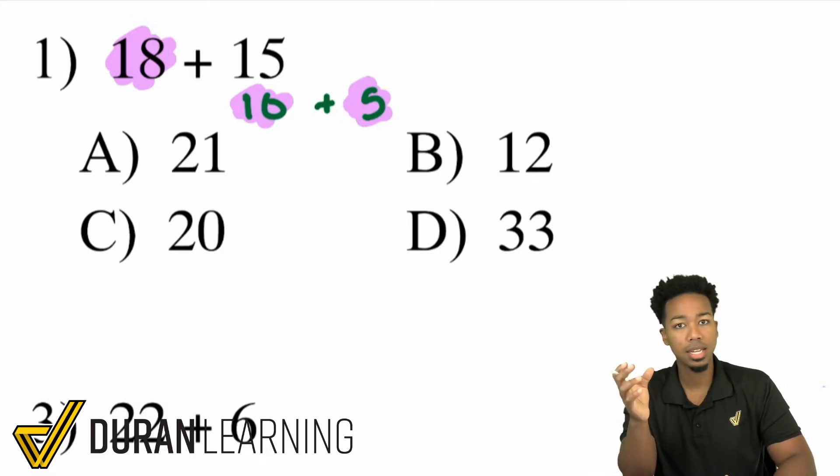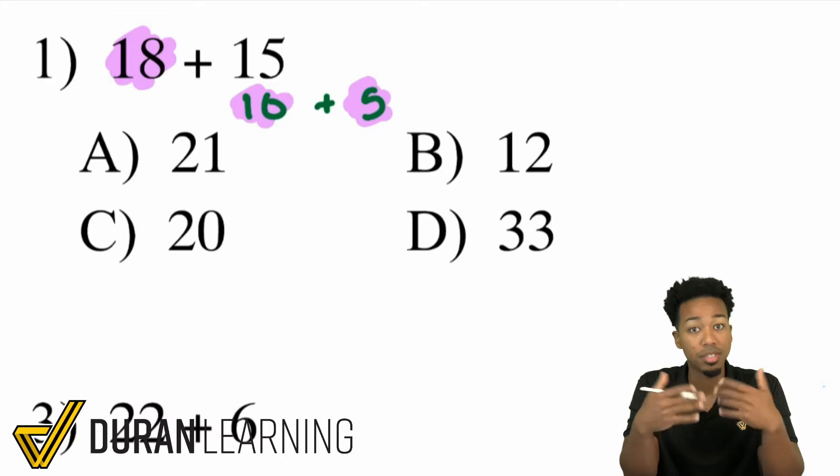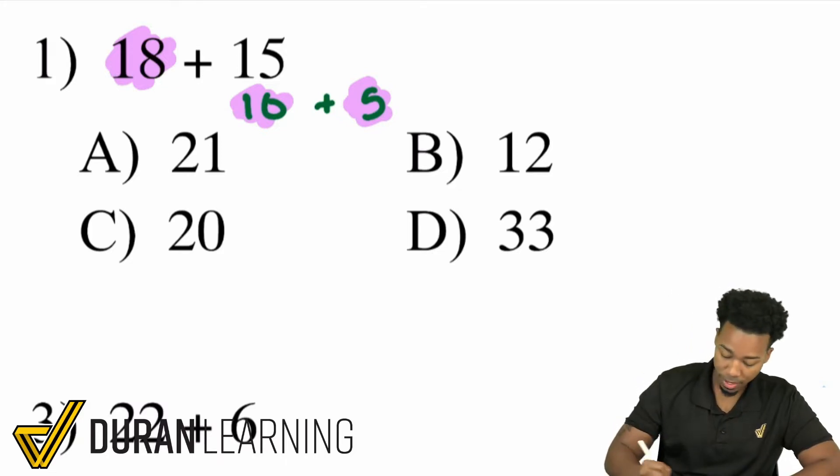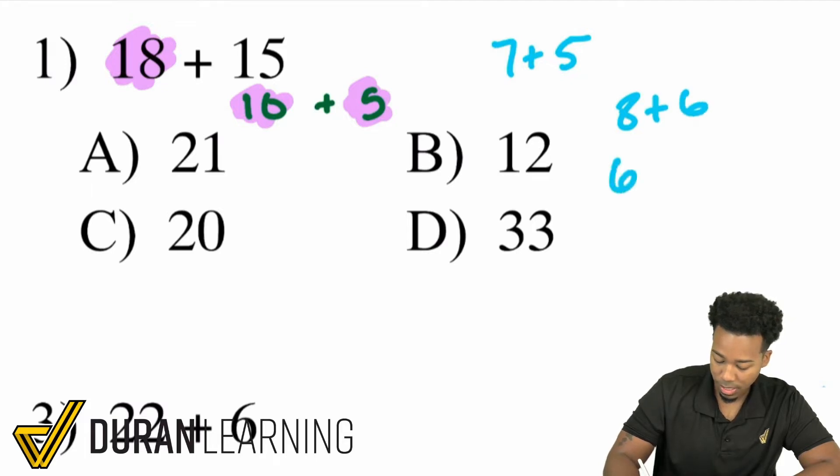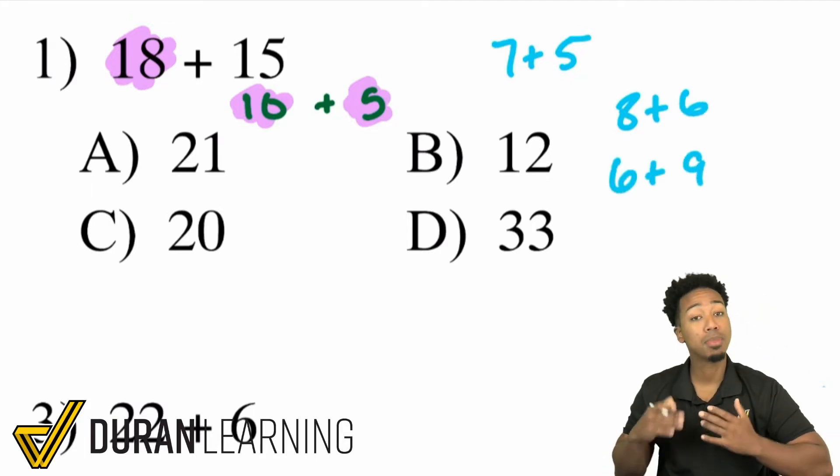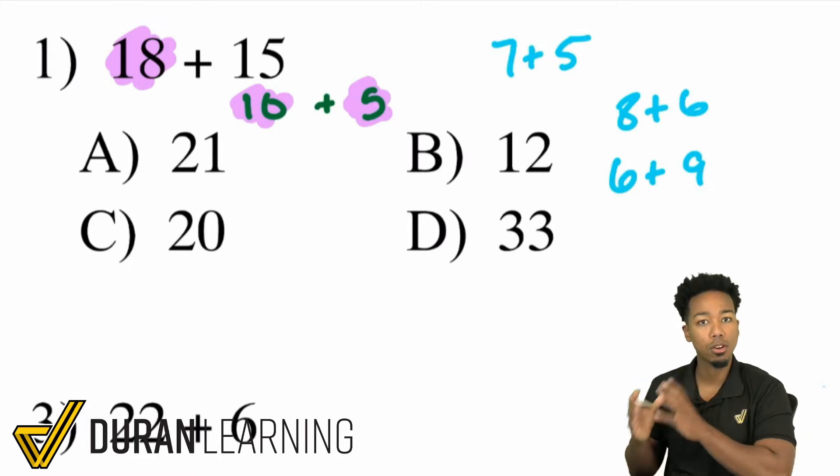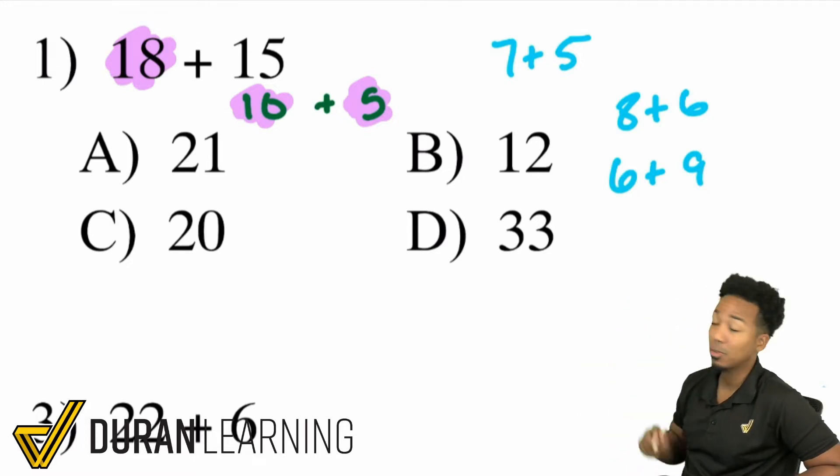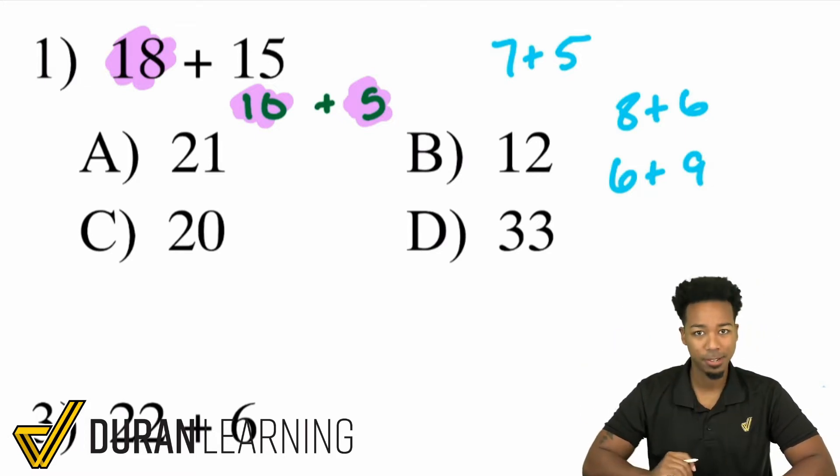What you need to understand is you need to be very, very good at those smaller bits of addition. So for example, if you know 7 plus 5, 8 plus 6, 6 plus 9, all of these basic ones, if you know those smaller sets than this right here, mental math, super duper easy.